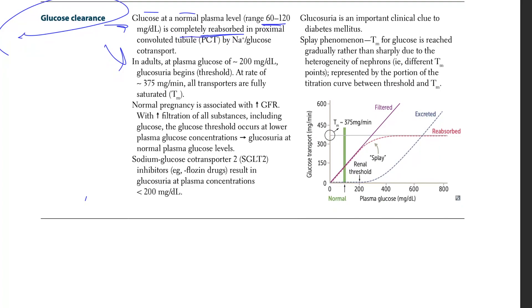Now in adults, at plasma glucose of 200 mg/dL, glucosuria begins. This is the threshold. 200 is the threshold, but at the rate of 375, you have been saturated. All transporters are fully saturated.